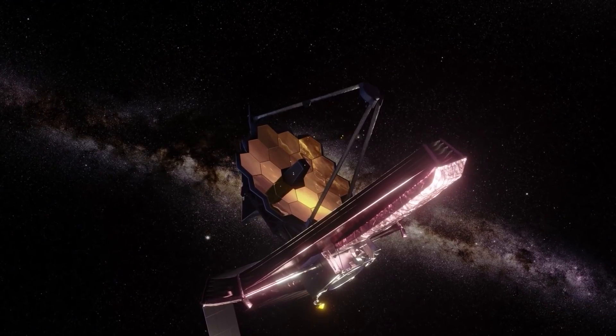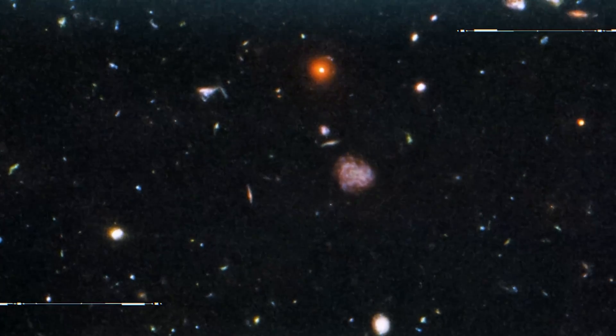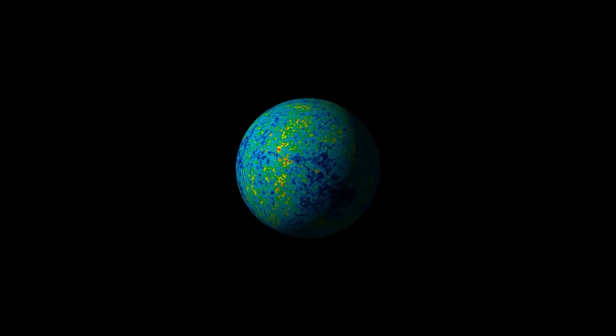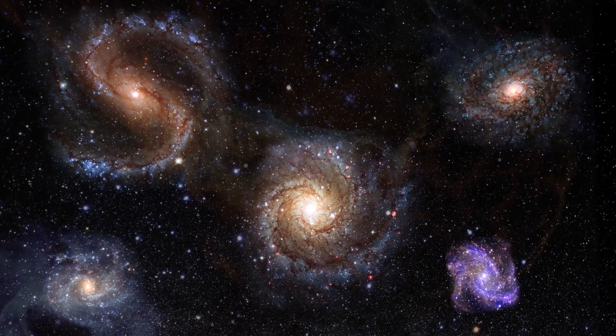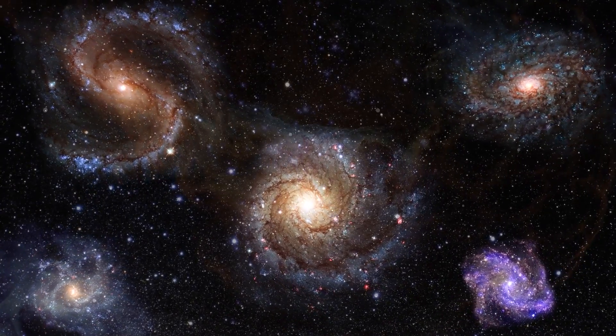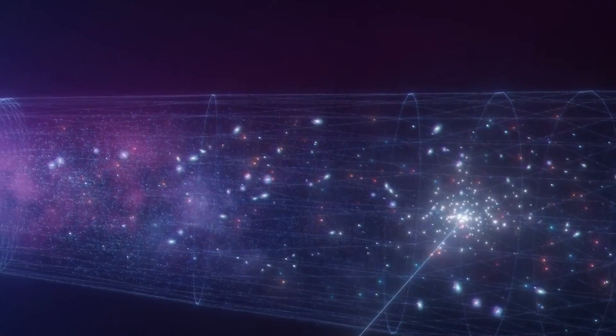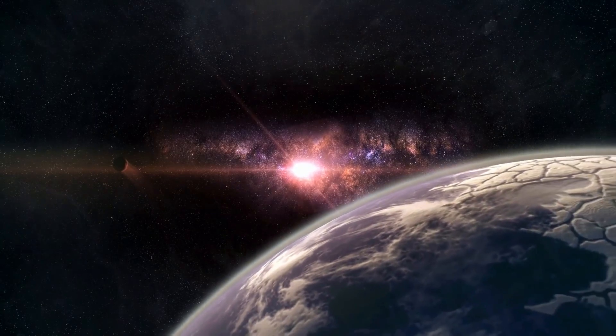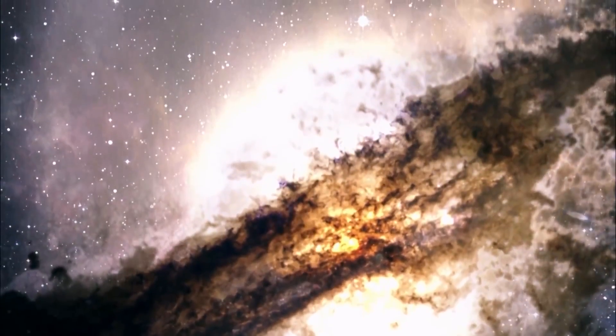The JWST has made an exciting discovery recently, uncovering six massive ancient galaxies that defy scientists' expectations. These galaxies formed when the universe was in its infancy, at a mere three percent of its current age. What makes these galaxies truly remarkable is their size, exceeding what was believed possible for galaxies that emerged so soon after the Big Bang. If the findings are confirmed, it would require a re-evaluation of our understanding of how the earliest galaxies came into existence.